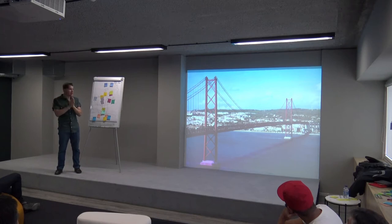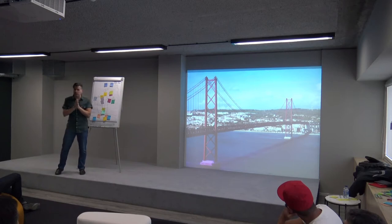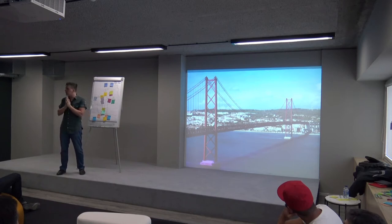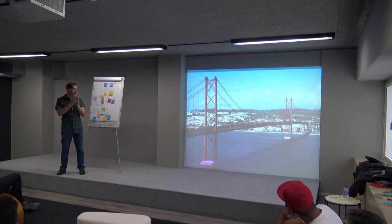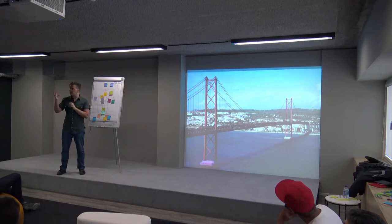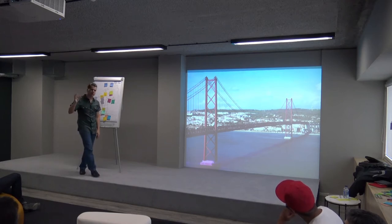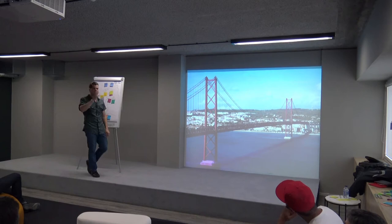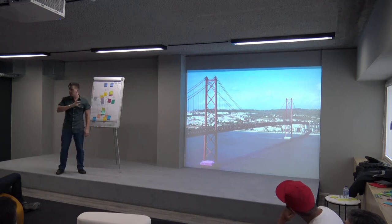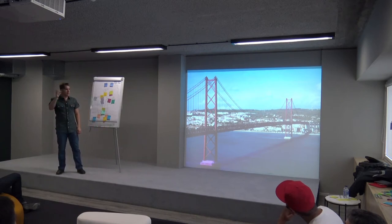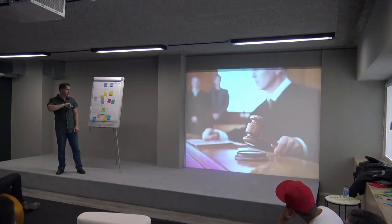The product owner isn't an expert in technical work — that's what they have the team for. Their job is to help communicate the needs, requirements, and priorities of the stakeholders to the technical people.